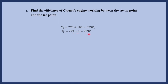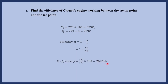We are asked to find the efficiency of the Carnot's engine. The efficiency is given by eta equals 1 minus T2 by T1. Substituting the values: 1 minus 273 upon 373. This gives 100 upon 373, which equals 0.2681. Multiplied by 100, the efficiency is 26.81 percent. This is how we find the efficiency of the Carnot's engine working between the steam point and the ice point.